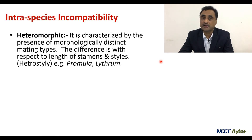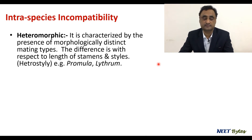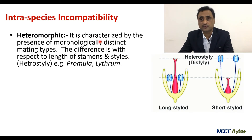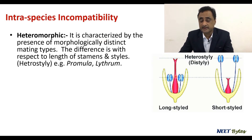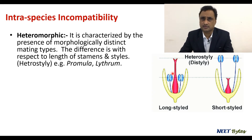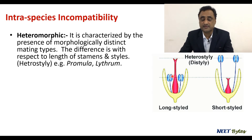Intraspecies incompatibility can again be of two types: heteromorphic and homomorphic. In the case of heteromorphic incompatibility, a difference occurs in terms of morphological structure — for instance, take the example of heterostyly, where there is a different length of style, which ensures cross-pollination, as we have also discussed in the chapter on pollination. Primula is one example in which we see this heteromorphic incompatibility.